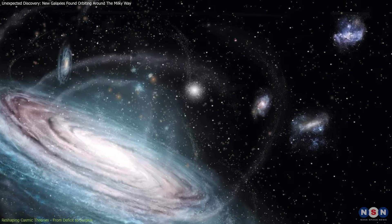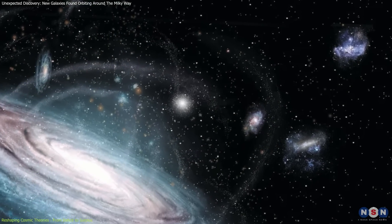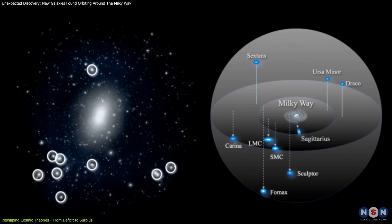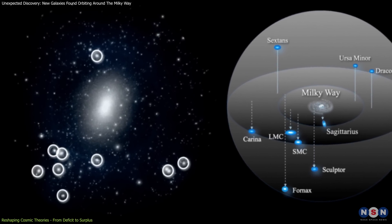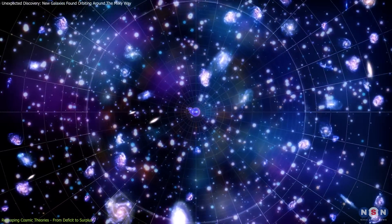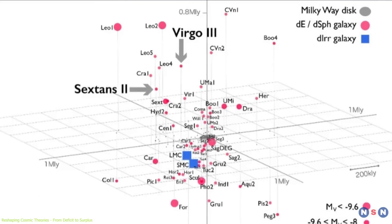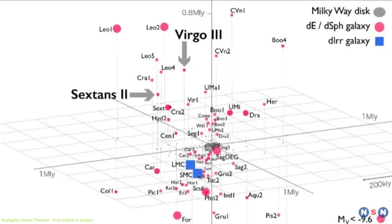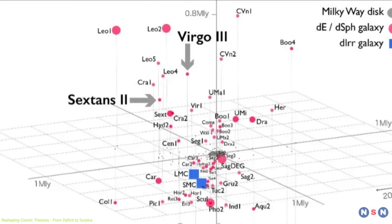For decades, astrophysics has grappled with the missing satellites problem, where the number of observed satellite galaxies around the Milky Way was significantly lower than predictions made by lambda-cold dark matter. The recent discovery of Virgo 3 and Sextans 2, however, is shifting this perspective dramatically.